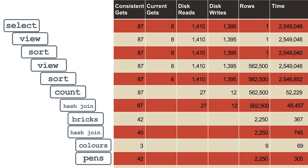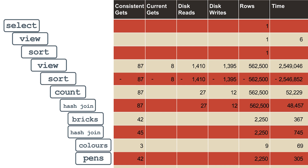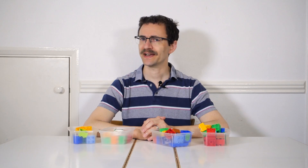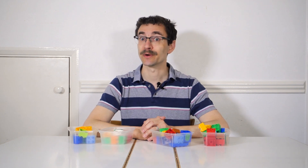Starting at the top, you can see the figures for the select operation are the same as those for the view below it, so this step did basically nothing. Going to the view and subtracting the values for the sort shows that this also did very little work. Walking down the plan and repeating this process for the gets, disk, and timing figures for each step reveals how much work they each did. When you get to the joins, you need to subtract off the values for both children. For the second join, subtract its 45 gets minus the 3 for reading colors and 42 for reading pens — so it also did zero gets. In fact, all non-leaf operations in this plan did zero consistent gets.